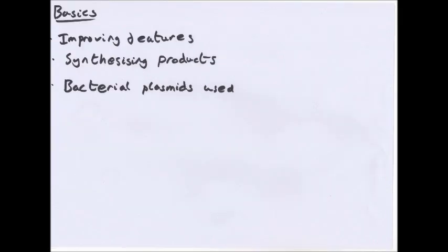Why do we want genetic engineering anyway? Two main reasons: improving features of the recipient organism, and for synthesizing products. Improving means making an organism better in general - perhaps getting resistance to some sort of disease or pest in a plant. The other sort is for synthesizing products: if you want to create a hormone, you'll genetically engineer something like a bacteria, and it will produce the compound for you.